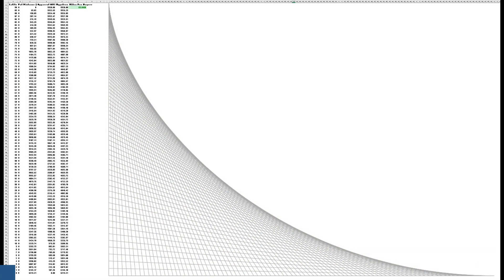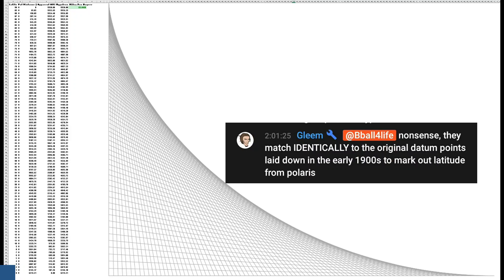This graph apparently explains how latitude lines would work on a flat earth. Now according to Mr. Gleam, this graph is supposed to match the globe model in every way.